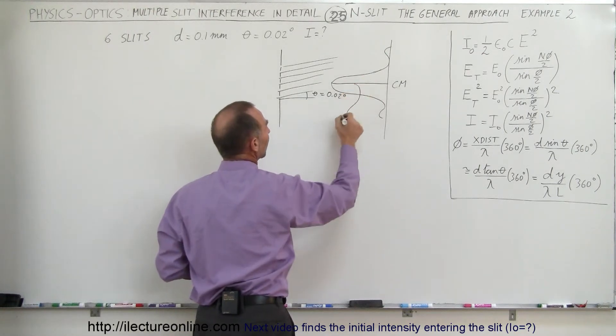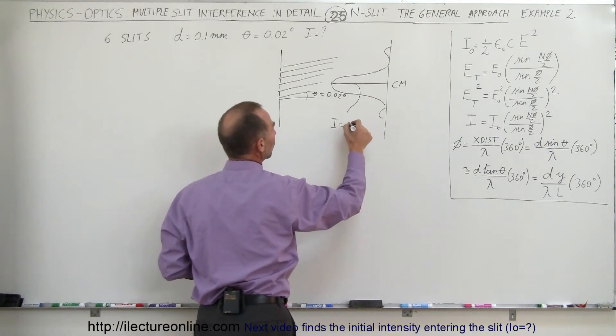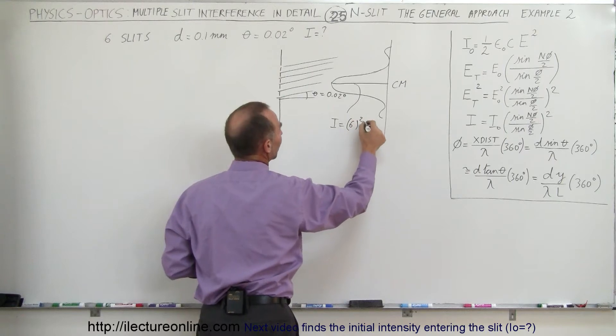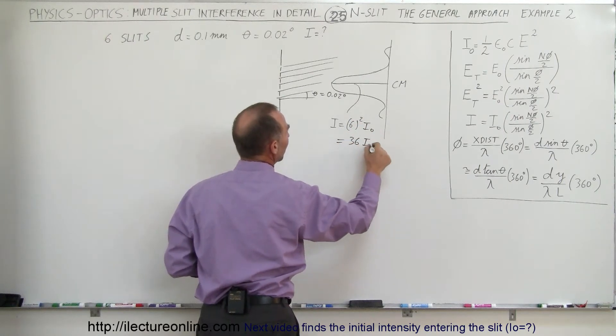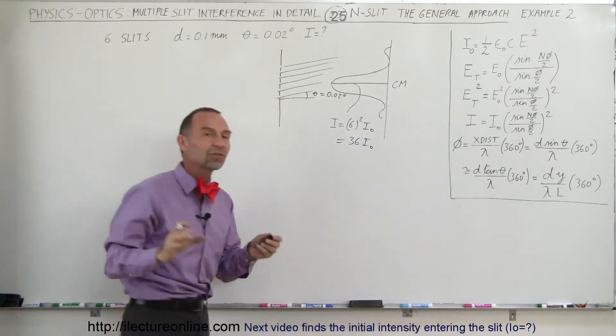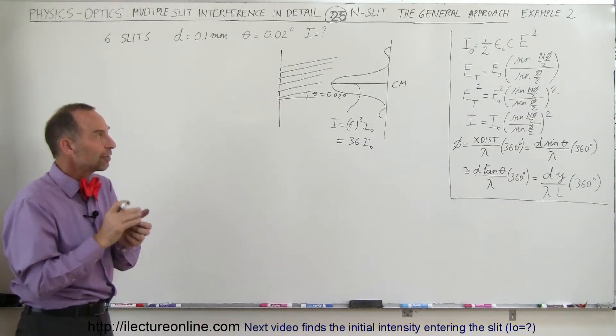With a six-slit interference pattern, the intensity of the central max, I, will be equal to 6 squared times I₀, which is equal to 36 times I₀. We still haven't expressed or found an expression for the value of I₀.